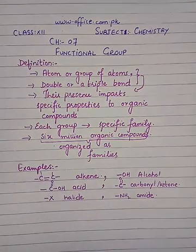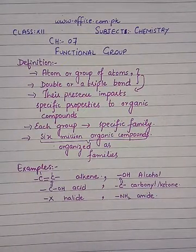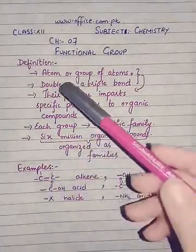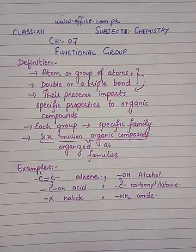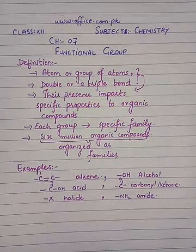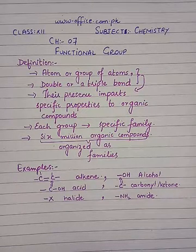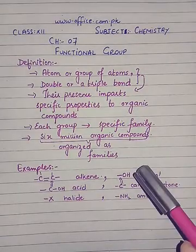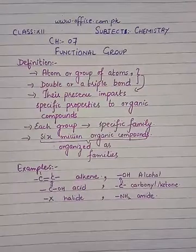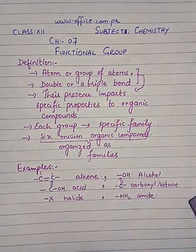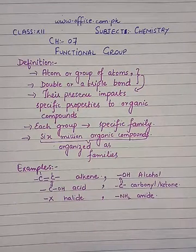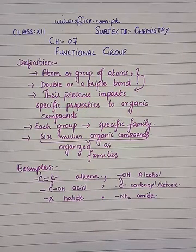For double or triple bonds: when a double bond is present, the group is called the alkene group, and all members share similar names — ethene, propene, butene, pentene, etc. Similarly, a triple bond defines the alkyne family with its own specific properties. We also have the OH group, which gives the alcohol family, the carbonyl group which gives ketones, and NH2 which gives amines.